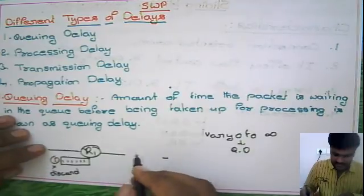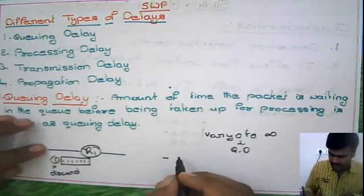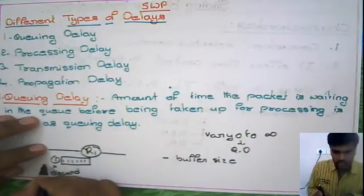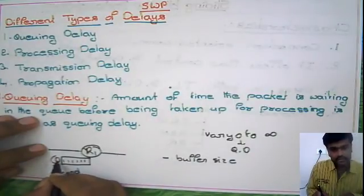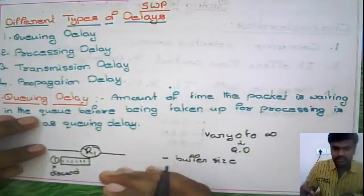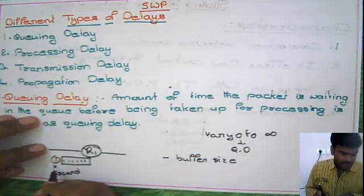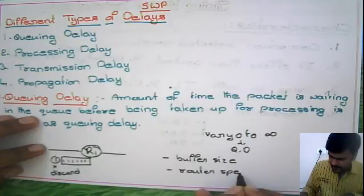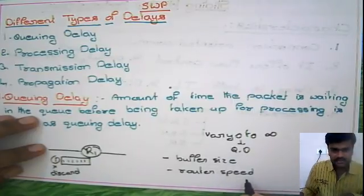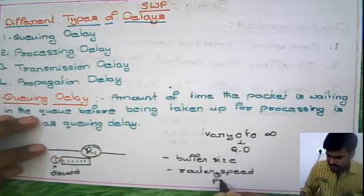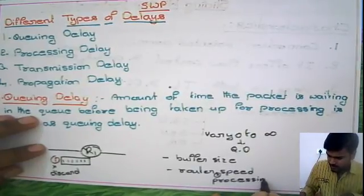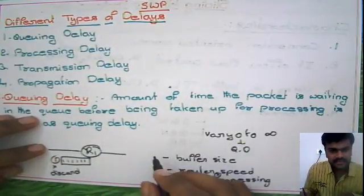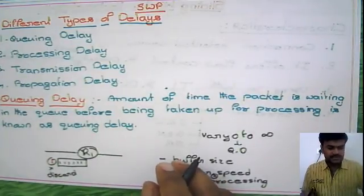So queuing delay depends on two main factors. First, buffer size — if the buffer size is more, you can accommodate more packets and reduce the infinity case. Second, router processing speed. Based on the router processing speed and buffer size, queuing delay will vary. This is something about queuing delay.